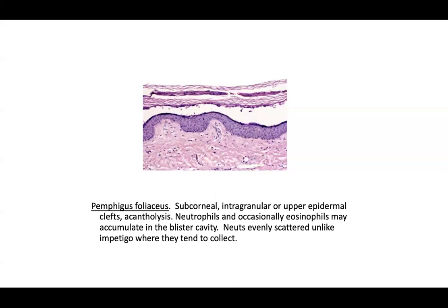Pemphigus foliaceus DIF shows a superficial network of IgG targeting desmoglein 1. You want to go perilesional for any autoimmune process because the antibodies are attached there but haven't yet been consumed by the antigen-antibody interaction, so you can still detect nice fluorescence when directly testing for the presence of the antibodies.